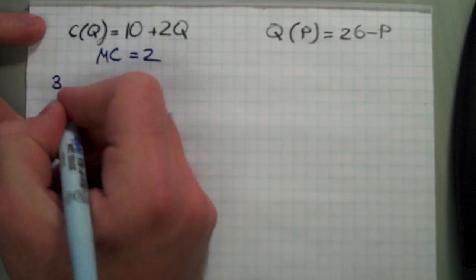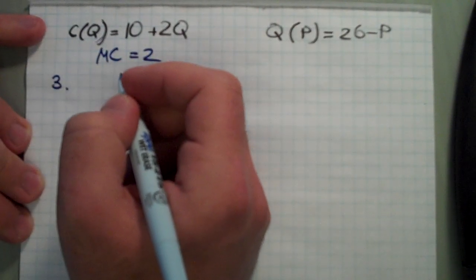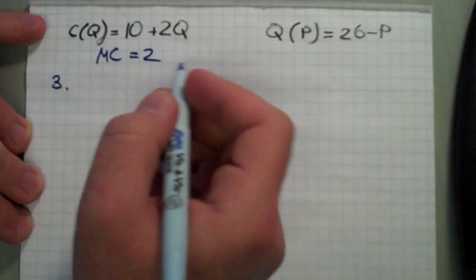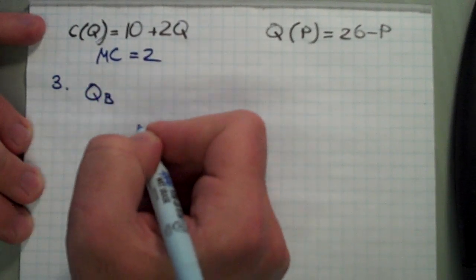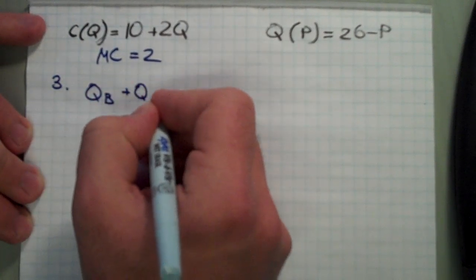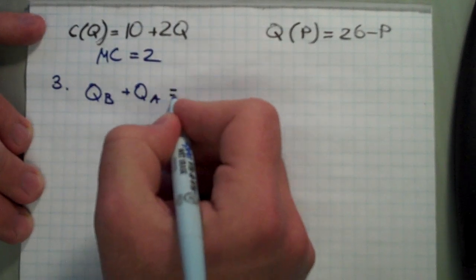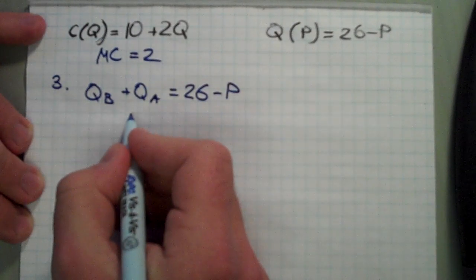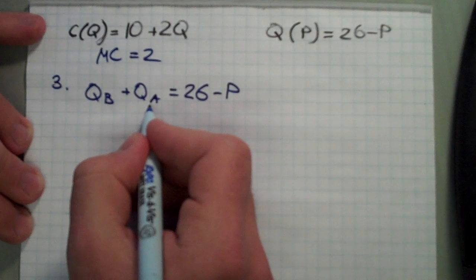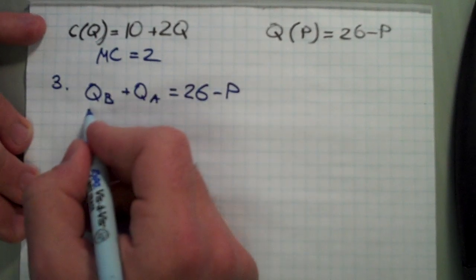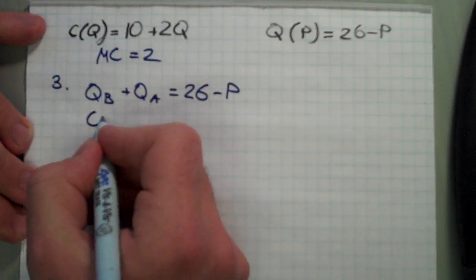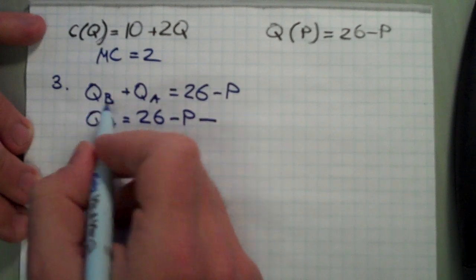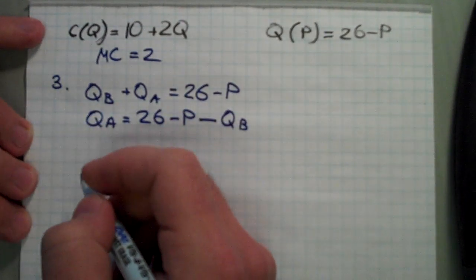Moving on to question number three: what is firm A's residual demand if firm B produces QB units? If firm B produces QB units, that quantity will be combined with firm A's output in the market demand. From here we can express quantity A as a function of price and the output of firm B: QA equals 26 minus P minus QB.